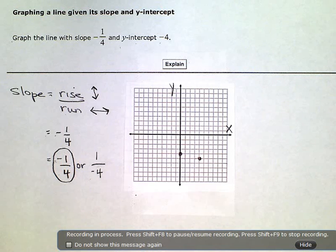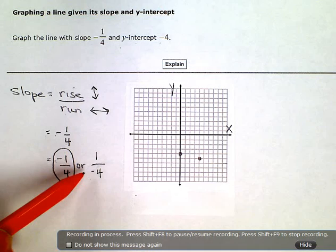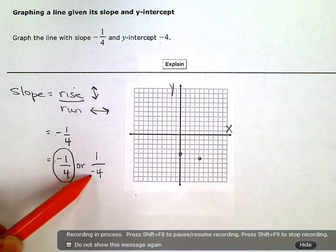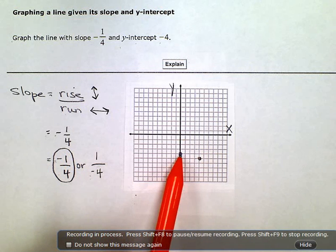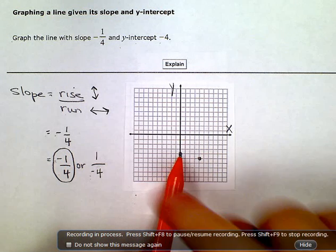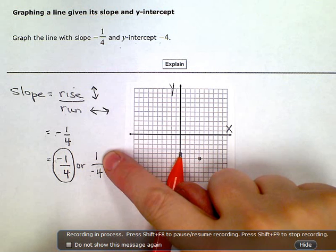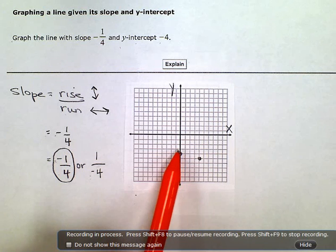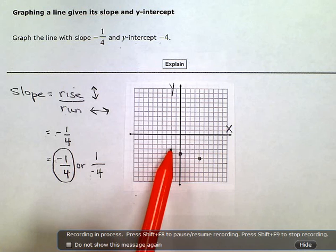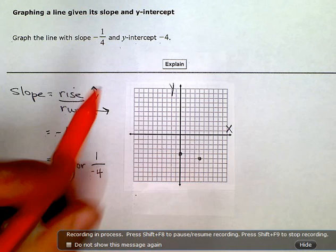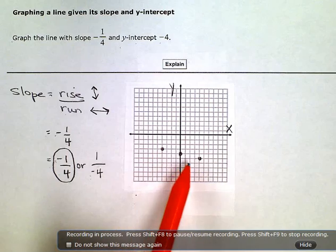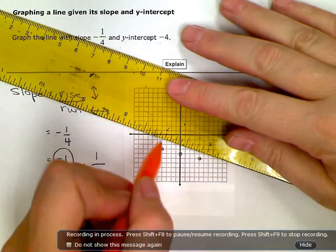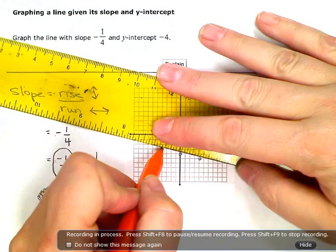If I would have used the other one, the positive one on top and the negative four on the bottom, I still would be on the same line. I'd get a different point in a different spot. If I would have done this one, where I'm going up one, and then backwards or to the left four, that would be up one, one, two, three, four. That means I'd put a dot right there. But either way, you can see they line up. They're still going to give me the same end result as far as my line goes.